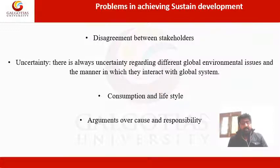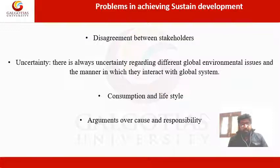The second problem is uncertainty — there is always uncertainty regarding different global environmental issues and how they interact with global systems. The third is consumption and lifestyle, as people often don't want to change their lifestyle. The last problem is argument over cause and responsibility — people don't want to take responsibility for what is happening in the global scenario and keep arguing with each other.